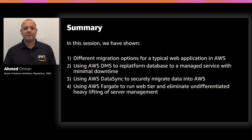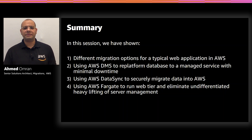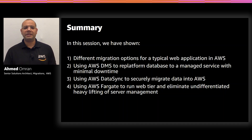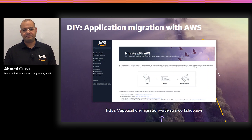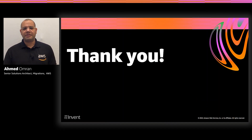Migration is not the end of the journey. Continuous optimization is key to successfully operating in the cloud. I would recommend looking at the AWS Well-Architected Framework. In this session, we covered different migration options for a typical web application, how to use AWS Database Migration Service to re-platform a database to a managed service with minimal downtime, how to use AWS DataSync to securely migrate data into AWS, and how to use Fargate to run the web tier in containers and eliminate the undifferentiated heavy lifting of server management. If you are interested in boosting your migration skills in a risk-free environment, please visit the Application Migration with AWS workshop, which will provide you with all the artifacts and step-by-step guidance. Thanks for watching.